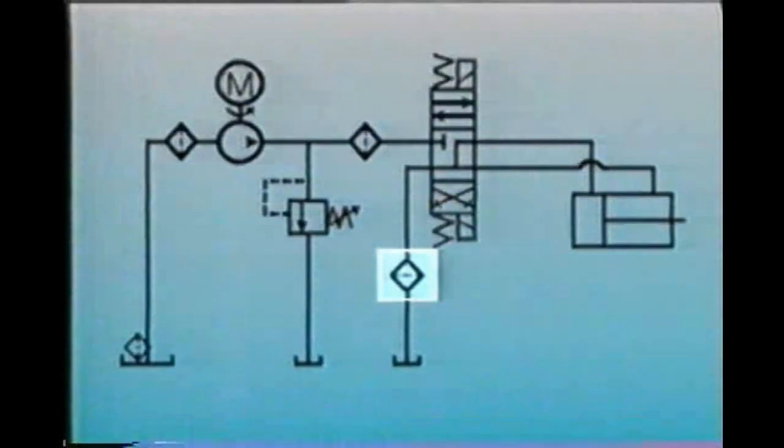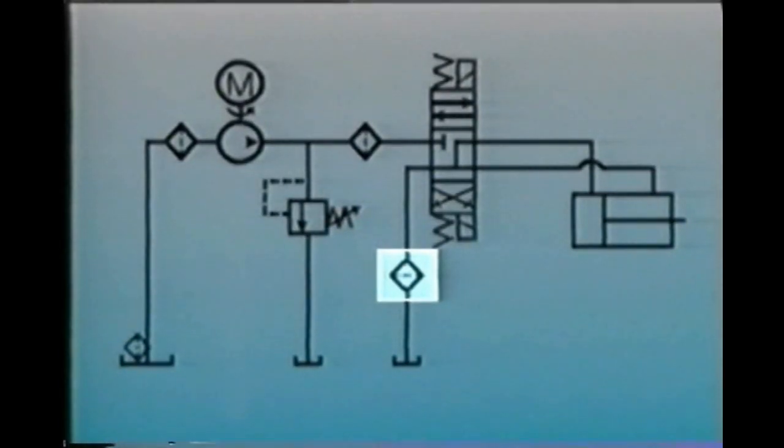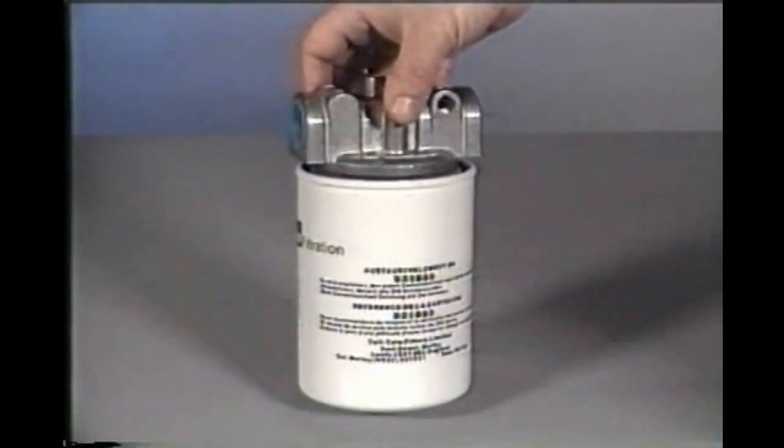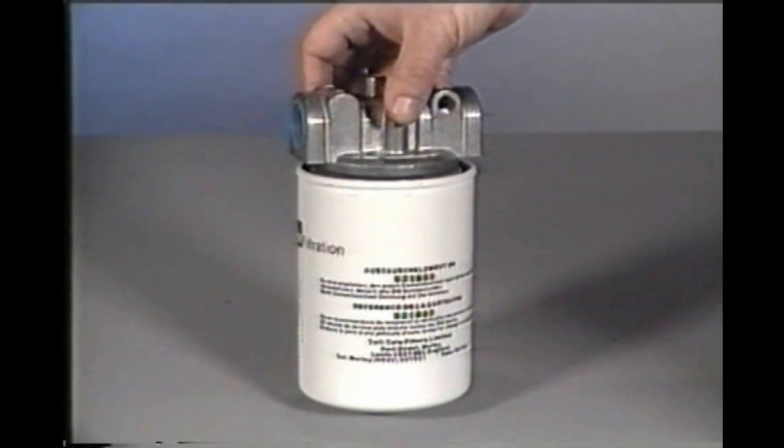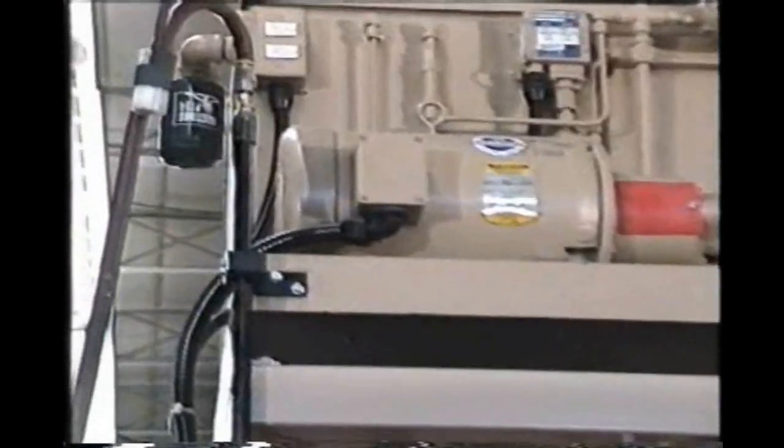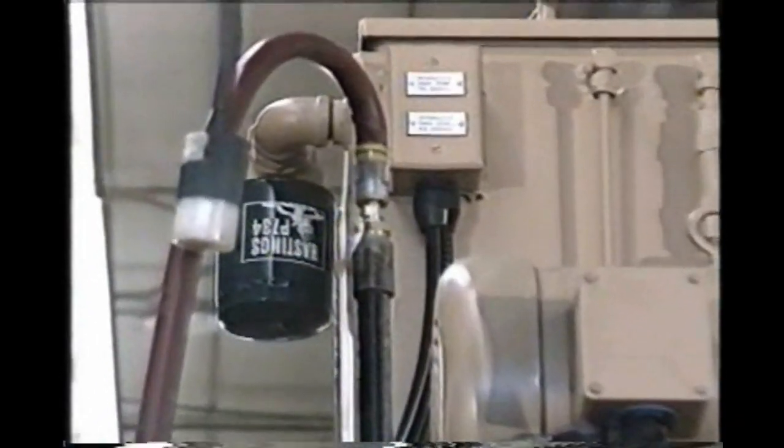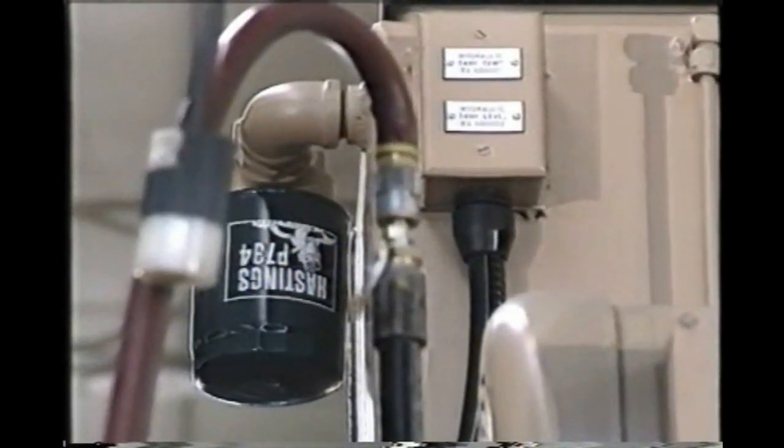Return line filters clean dirt from the system before it has a chance to return to the sump. They are installed in the return line to the sump. These filters generally have a rating from 40 microns down to 3 microns or less. Although return line filters operate under some pressure, they aren't exposed to main system pressure, so they are less expensive than pressure filters. One disadvantage of a return filter is that it only catches the dirt after it has been through the system, not before.